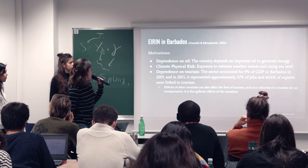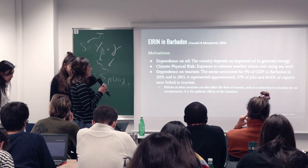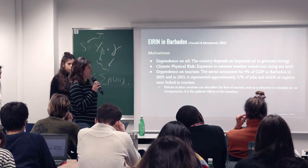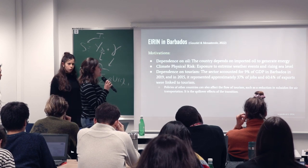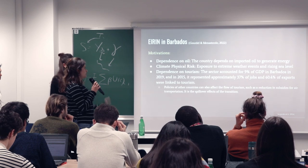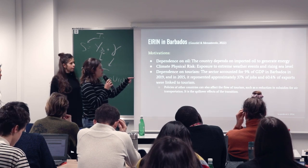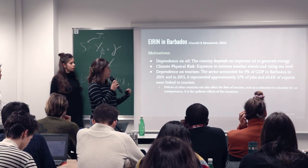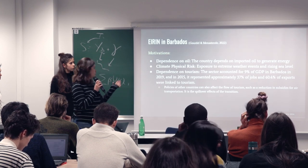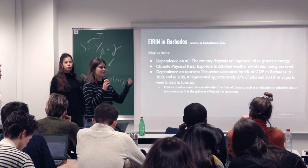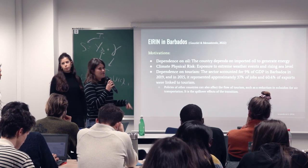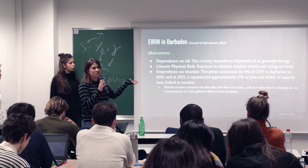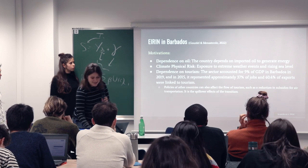Regarding the IRIN model in Barbados: similarly to Colombia, Barbados has high dependence on oil for energy — which is imported — making the situation complicated. The country is exposed to physical climate risk and depends heavily on tourism. Thirty-seven percent of jobs on the island depend on tourism, and tourism is affected by what the paper calls spillover effects of the transition: other countries' actions to fight climate change will affect the Barbados economy. For example, if fuel subsidies are reduced, fewer people will travel to Barbados.